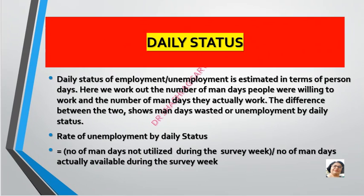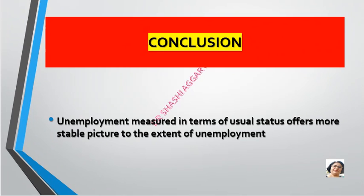The rate of unemployment by daily status is the number of man-days not utilized in the survey week divided by the number of man-days actually available in the survey week. We calculate daily status according to the number of man-days. The usual status gives a stable, long-term picture of employment.